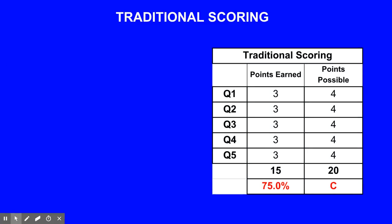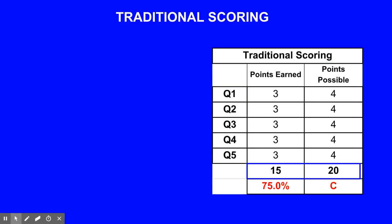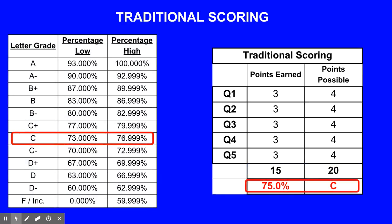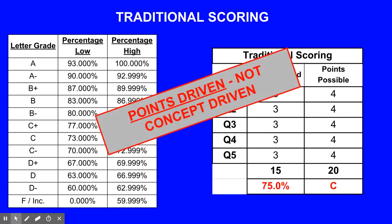In this slide, we will look at an example of traditional scoring. You'll notice that traditional scoring is focused on points. There are 5 questions with a possible 4 points each and a total of 20 points. This student earned 3 out of 4 on all 5 questions for a total of 15 points, receiving a 75% or a C. You'll note that the traditional assessment is points driven, not concept driven.